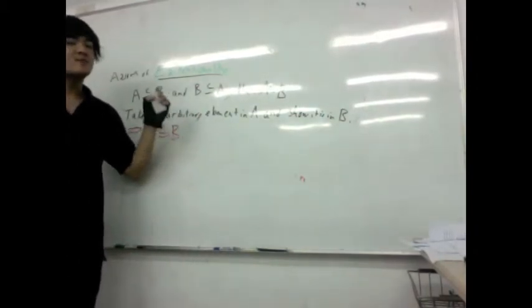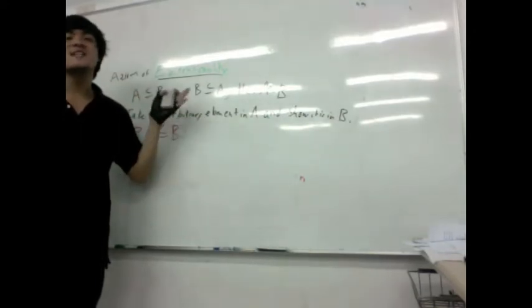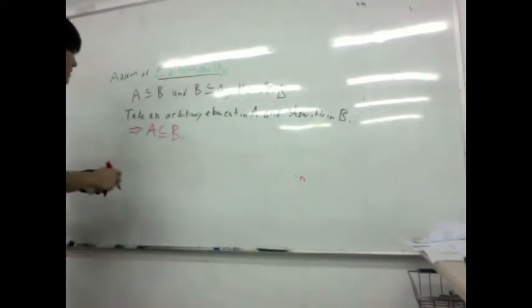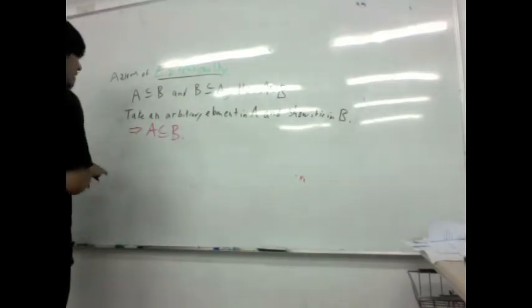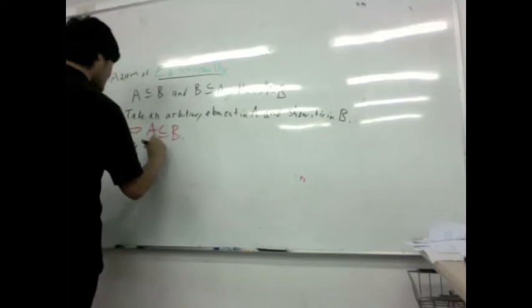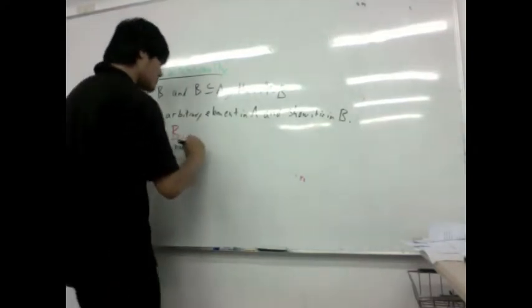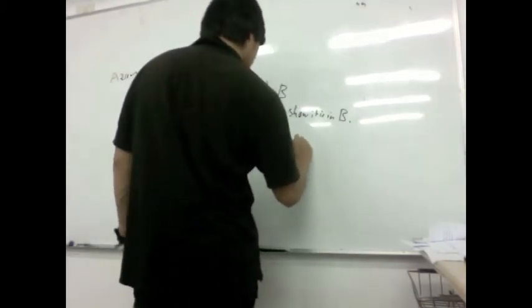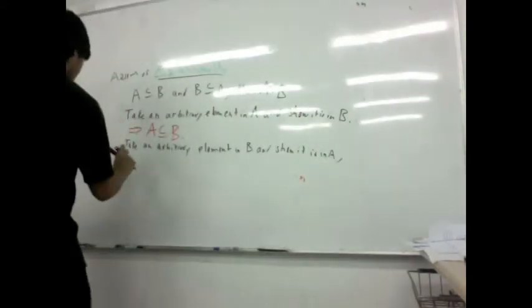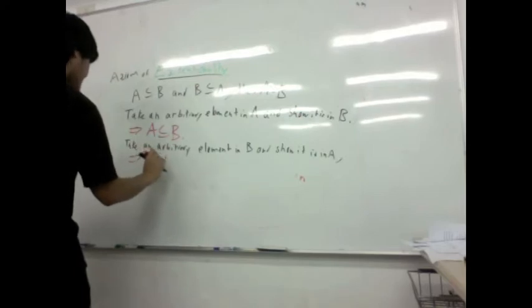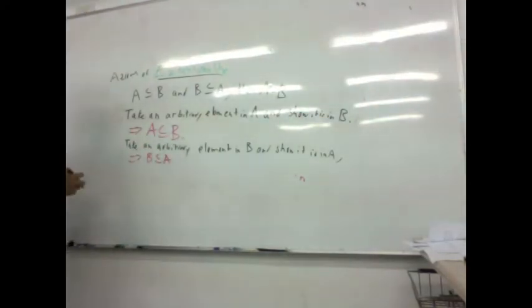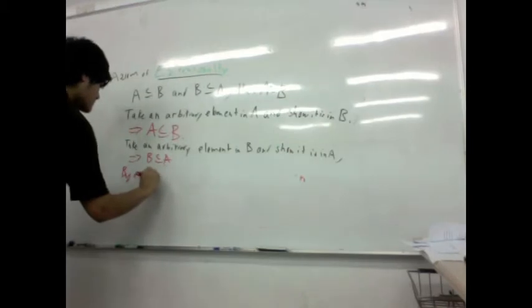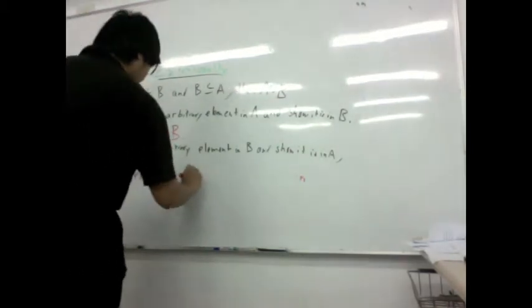I took one element in A. I didn't pick a specific one, but I said let this element be any element in A, then it will have to be in B. Therefore, all elements in A have to be in B. Likewise, if you take an arbitrary element in B and show it is in A, then this implies B is a subset of A. And this will then apply, by extensionality, A equals B.